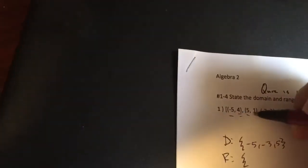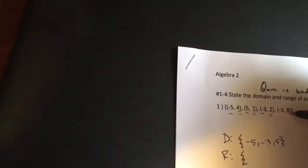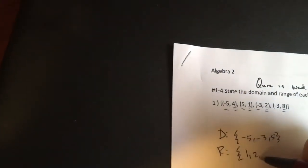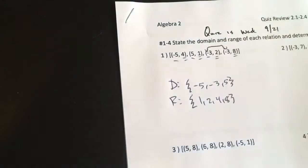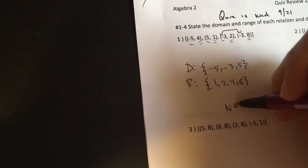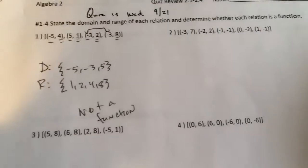All right, the range is all the unique y values. So we got 4, 1, 2, and 8. So 1, 2, 4, and 8 if I go in order. Is this a function? Well, no folks. I got a cheater here. Negative 3 is a cheater. This is not a function. Remember, we look at the x's. We look at the boys to make sure we don't have any cheaters.